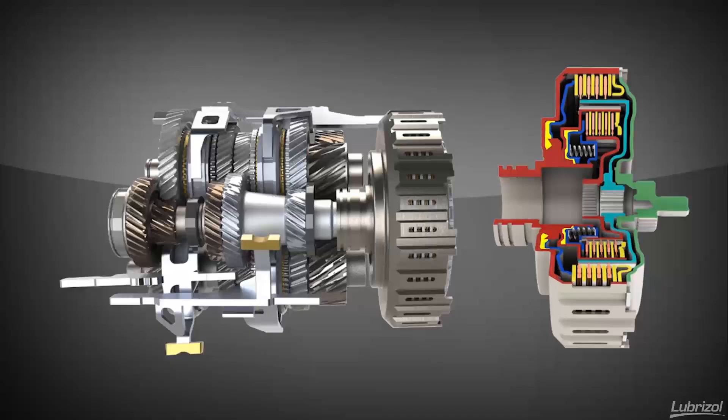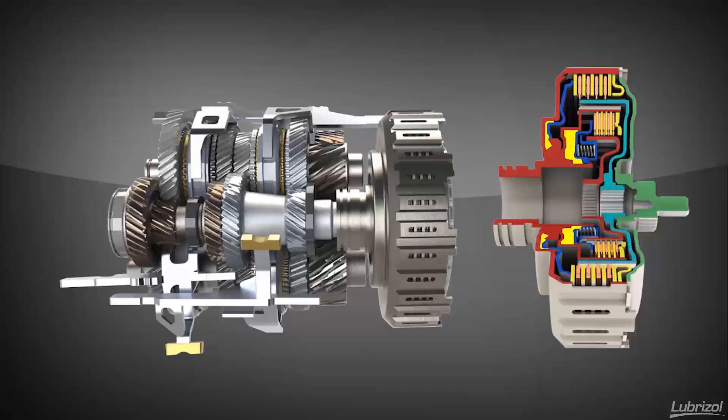Hydraulic fluid pressure is used to actuate the respective clutches as needed. Fluid is used to lubricate and cool the clutch as well.